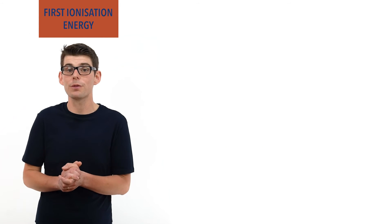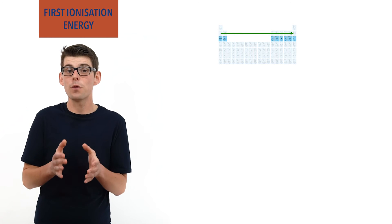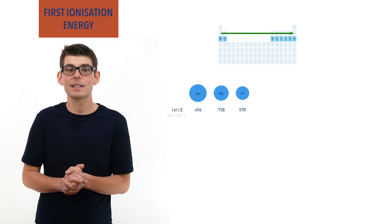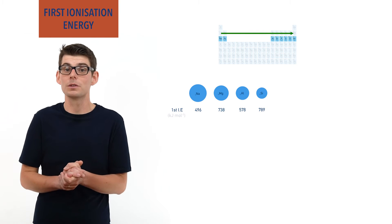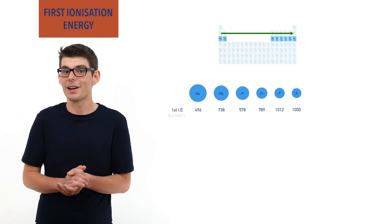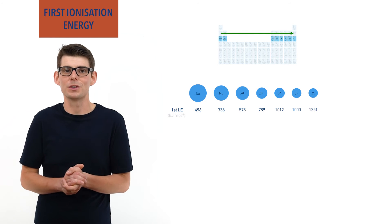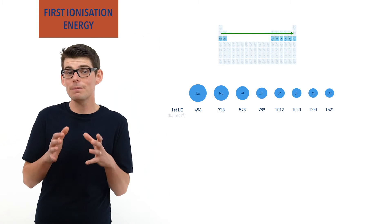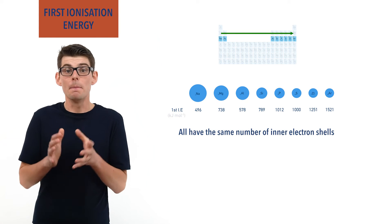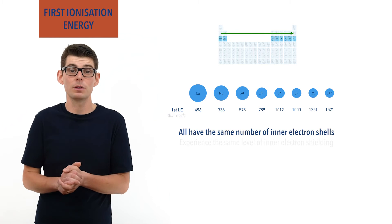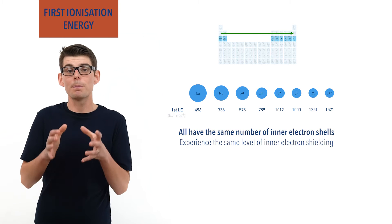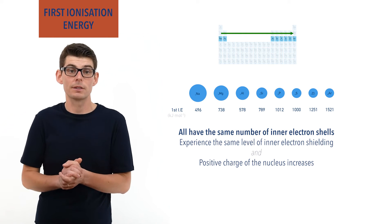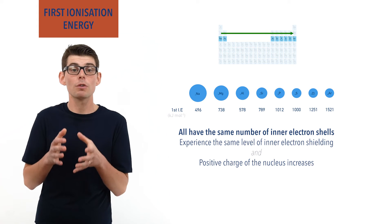For example, across period 3: sodium has a first ionization energy of 496 kJ/mol, magnesium 738, aluminium 578, silicon 789, phosphorus 1012, sulfur 1000, chlorine 1251, and argon 1521 — a clear trend showing an increase in first ionization energy. All these elements have the same number of inner electron shells, meaning they all experience the same level of inner electron shielding, whilst moving left to right the positive charge of the nucleus increases, causing greater attraction, decreasing atomic radius, and making it harder to remove the outermost electron.